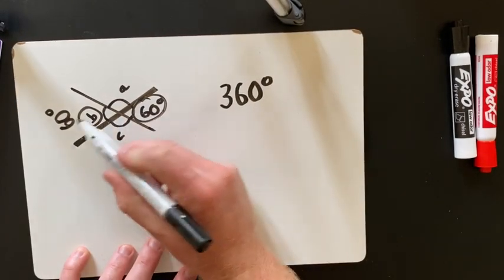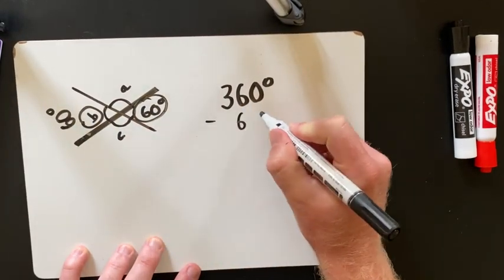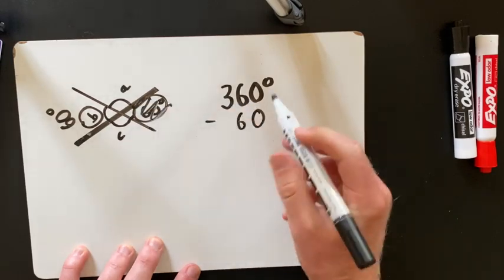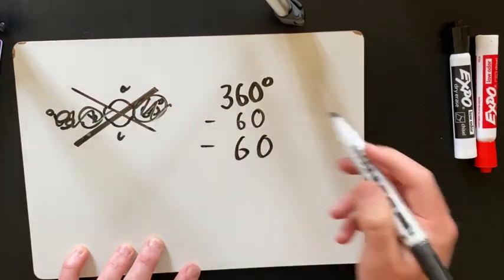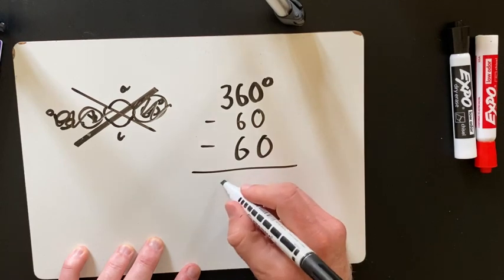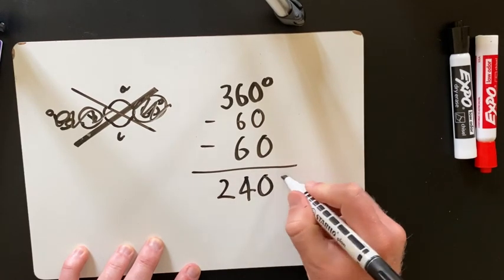Then if I take away 60 and 60, take away 60 so that's this bit, take away 60 that's this bit, I should be left with 240 degrees.